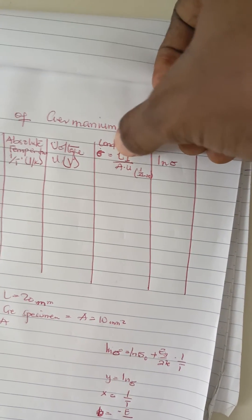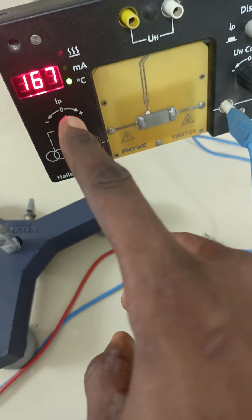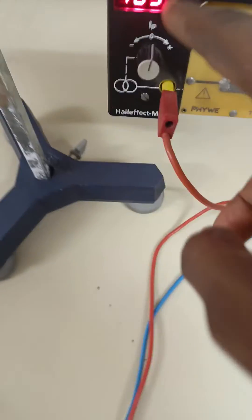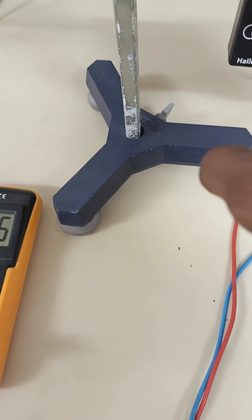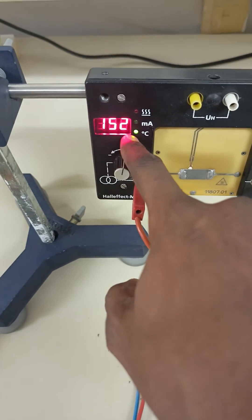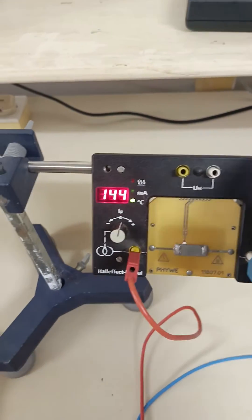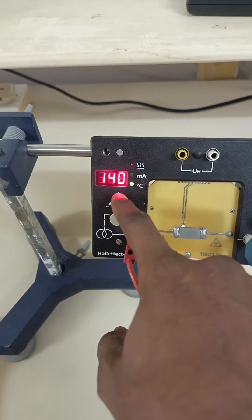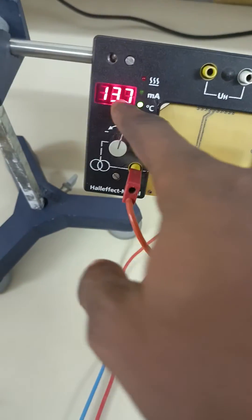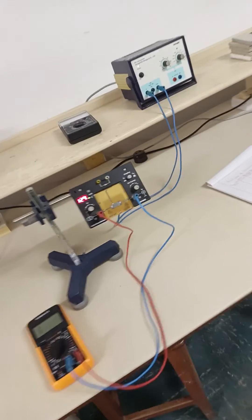The next column in the table is conductivity. Conductivity is found using: conductivity = (l × current) / (area × voltage), where l is the length of the germanium specimen. As the temperature drops — at 160, 150, 140, 130, 120 — we record the corresponding voltage at each step. This is how we record the values for the band gap of germanium experiment.